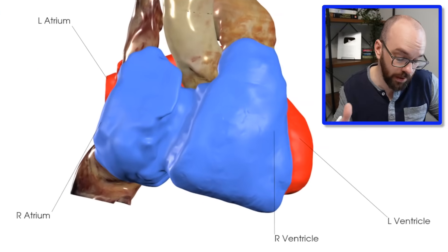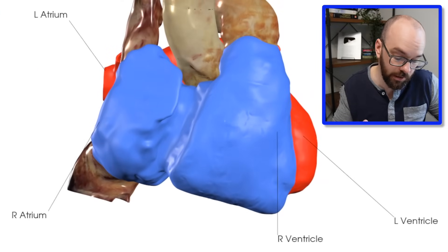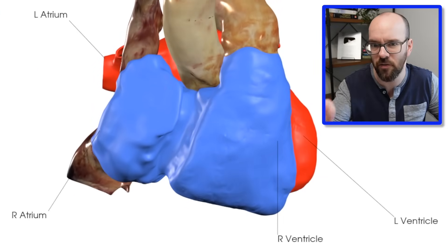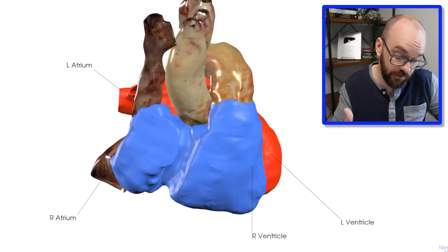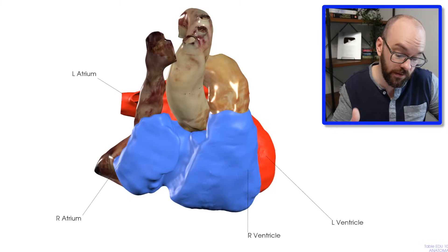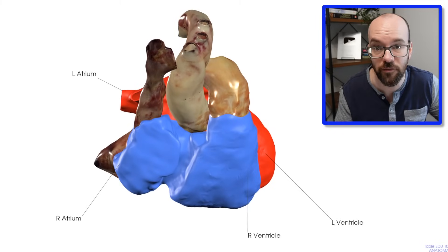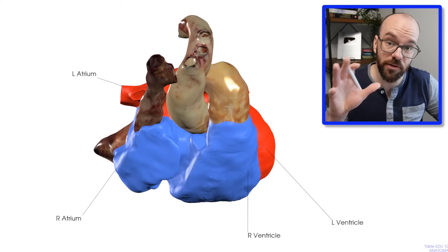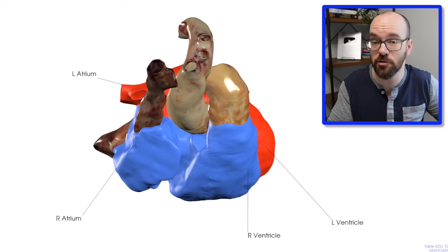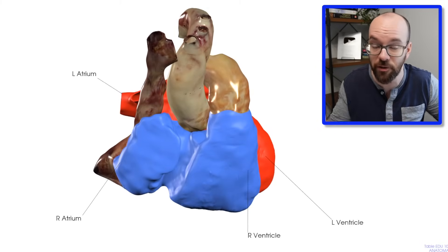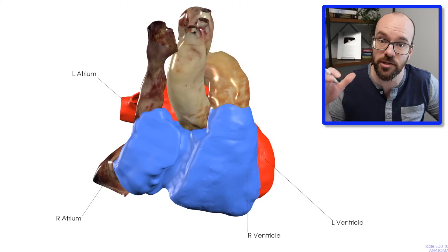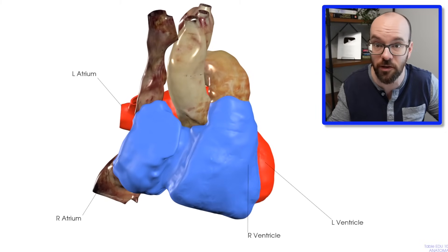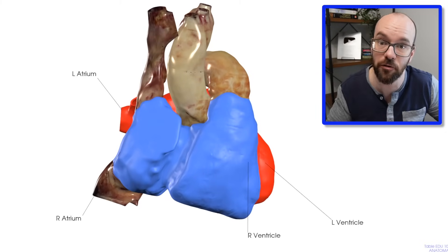In the Anatomage models we can see the right atrium and right ventricle sitting anterior to the left atrium and left ventricle. For the rest of the video I'll assume you know those structures well, but if you want to refresh your lesson on blood flow through the heart, check out my pathway of blood through the heart video — links down below.